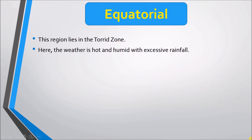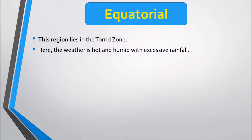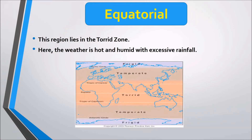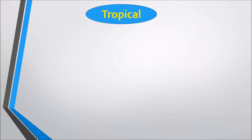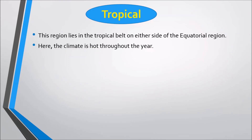Next is the Equatorial region, which lies in the Torrid Zone. Here the weather is hot and humid with excessive rainfall. Next is the Tropical region, which lies in the tropical belt on either side of the equatorial region. Here the climate is hot throughout the year.